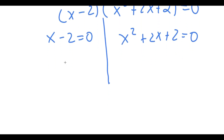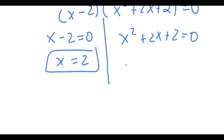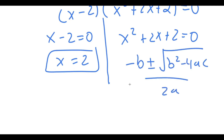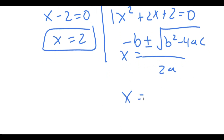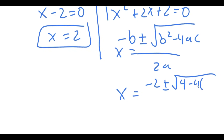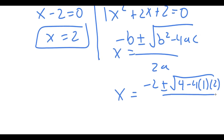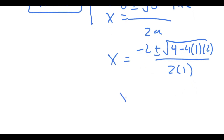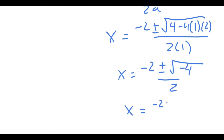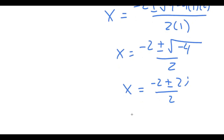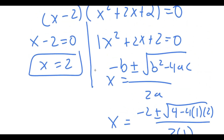For x minus 2 equals 0, x is equal to 2. For x squared plus 2x plus 2 equals 0, I use the quadratic formula: x equals negative 2 plus or minus the square root of 4 minus 4 times 1 times 2, all over 2. This equals negative 2 plus or minus the square root of negative 4 over 2, which is negative 2 plus or minus 2i over 2, giving x equals negative 1 plus or minus i. So these are my three solutions.